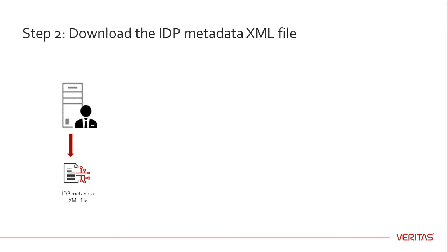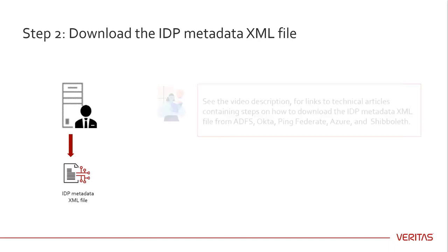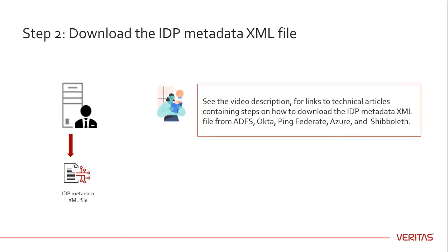Download the IDP metadata XML file from the identity provider. It contains metadata about the identity provider and is used to establish trust between the NetBackup master server and the identity provider. See the video description for links to technical articles containing steps on how to download the IDP metadata XML file.